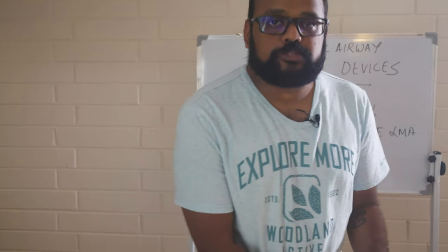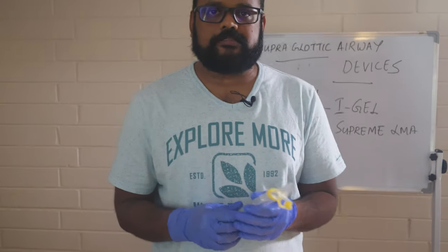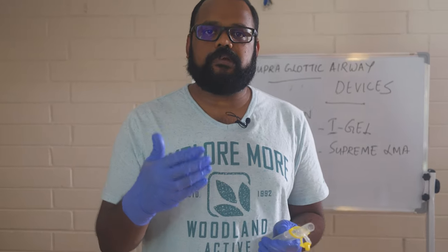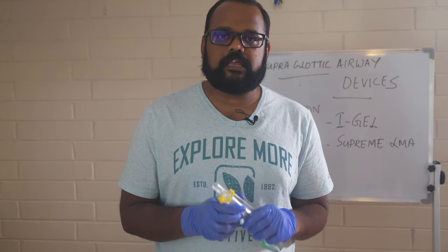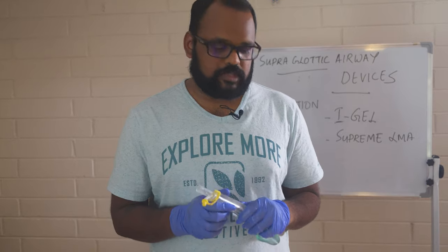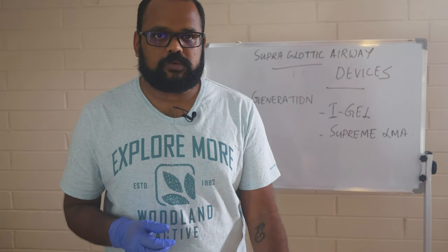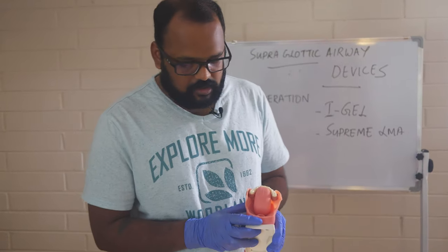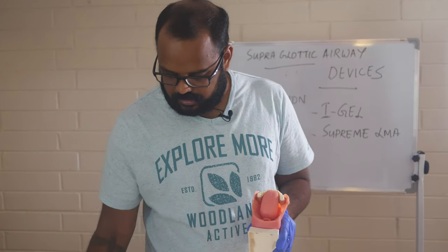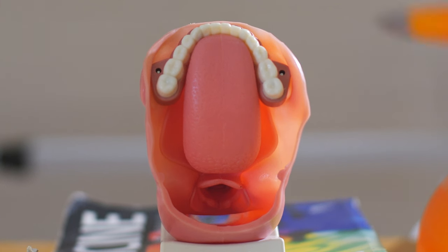Today we're going to talk about supraglottic airway devices. Supraglottic means they are sitting above the glottis, or in other words, sitting in the hypopharynx. To understand this, we need to go through the anatomy first. I have a little mannequin here which clearly explains the upper airway anatomy of the human airway system.